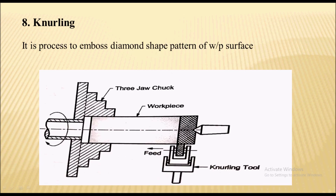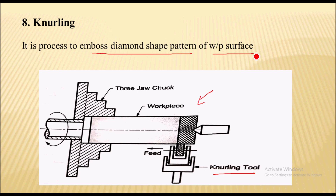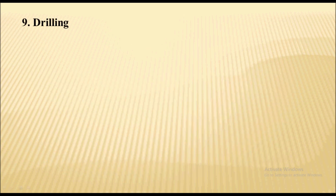The next operation is knurling. Here you can see the setup for knurling operation, where a special knurling tool is used. It is a process to emboss a diamond shape pattern on the workpiece surface. Knurling is performed to provide a better grip on the workpiece surface, and it also gives a decorative look to the workpiece.